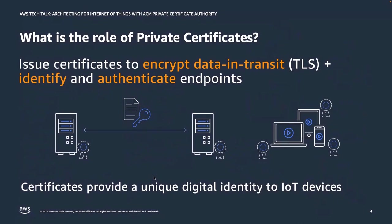One thing all IoT use cases have in common is that they involve physical hardware devices. Those devices use digital certificates for device identity and trust. You can think of certificates as a digital ID card assigned to an endpoint or device — it allows us to authenticate that endpoint and create a secure encrypted communication channel. It enables encryption for data in transit so that a distributed network of devices can communicate securely with one another and with your centralized servers.